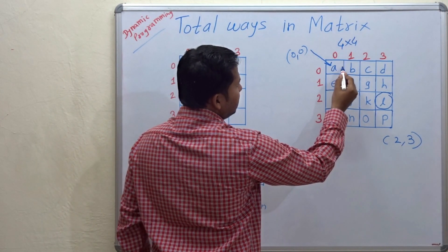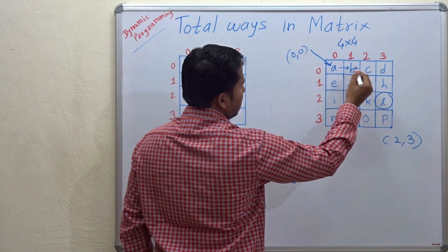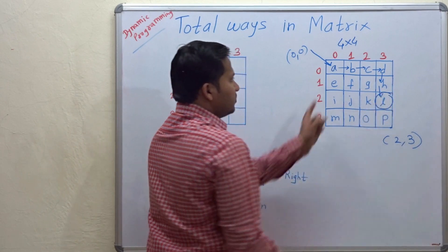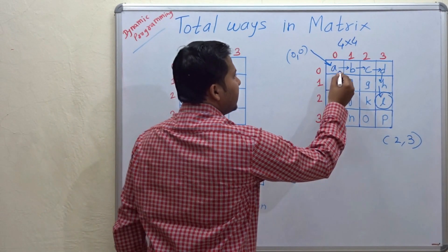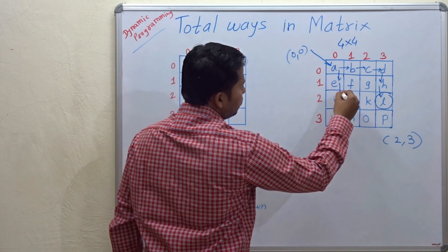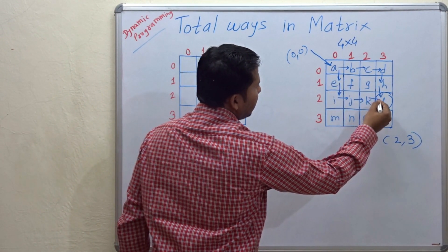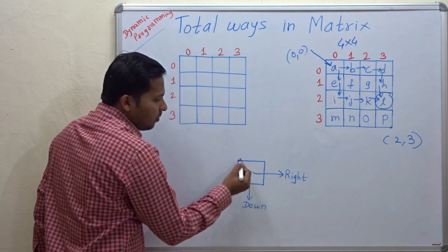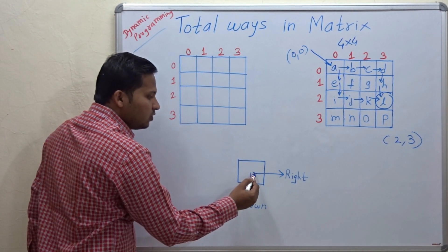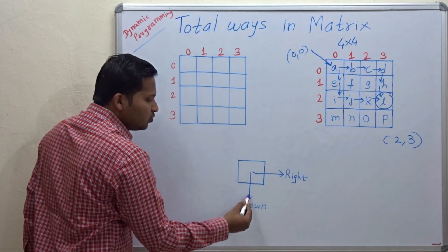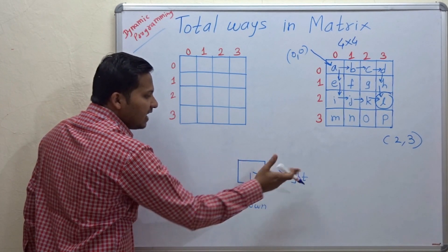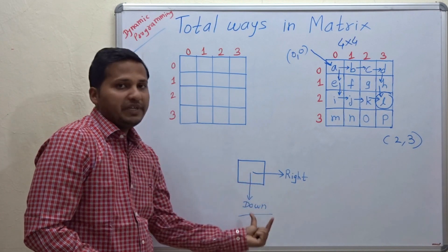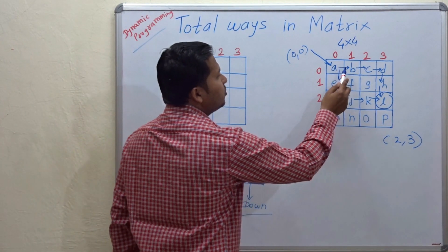Let's write the first way: from A to B, B to C, C to D, D to H, and H to L. That is one path. The second path can be A to E, E to I, I to J, J to K, and K to L. Here you have to remember: from a cell you can only go to the right cell or to the down cell. Only these two transitions are permitted.